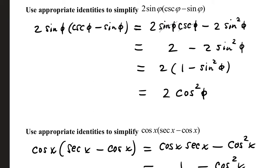Use appropriate identities to simplify 2sin(φ)·csc(φ) - sin(φ). A good move here is to distribute: 2sin(φ)csc(φ) - 2sin²(φ). Since sine and cosecant are reciprocals, their product is 1, so 2·sin(φ)·csc(φ) = 2. Factor out the 2, giving 2(1 - sin²φ).